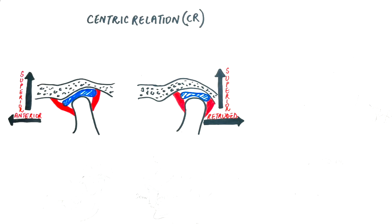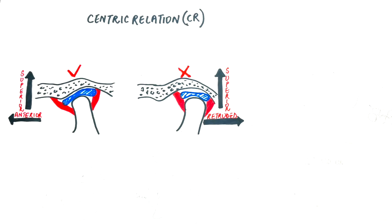The concept of centric relation emerged due to the search for a reproducible or repeatable mandibular position that would enable the prosthodontic rehabilitation of the jaws. The anatomic site of focus while explaining almost all these terms is the TMJ.